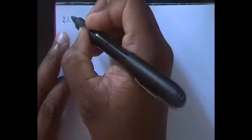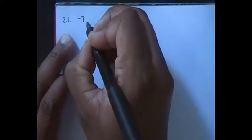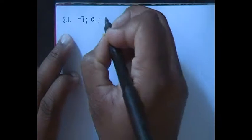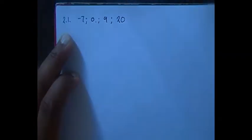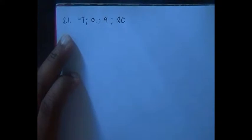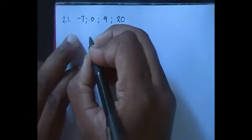Let's write it down. So it's negative 7, 0, 9, 20. So first, question 2.1, they want us to show that the general term of the quadratic number pattern is given by a specific expression. So all we just need to do is find the general term and check if it matches the one in question 2.1. So let's find the general term.